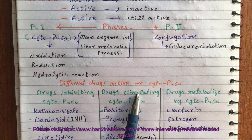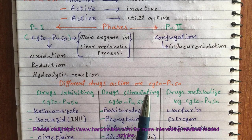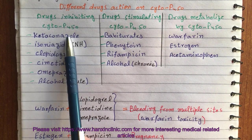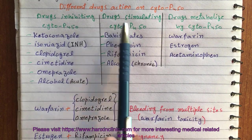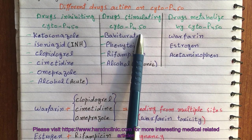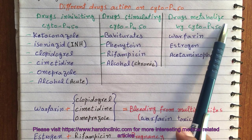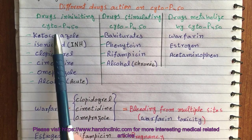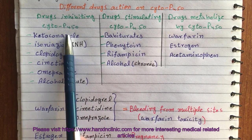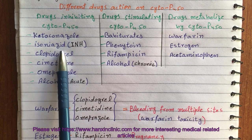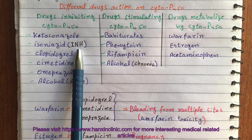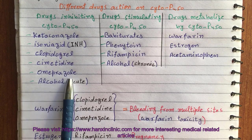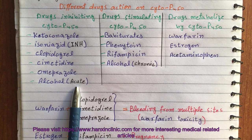Here are different drugs acting on cytochrome P450 enzyme. Some drugs are inhibiting cytochrome P450 enzyme. The drugs inhibiting cytochrome P450 enzyme are ketoconazole, isoniazid (also known as INH), clopidogrel, cimetidine, omeprazole, and alcohol — but here it is acute alcohol.